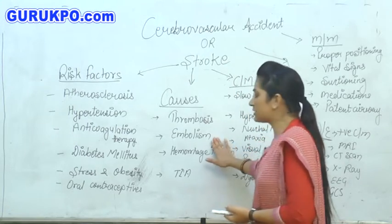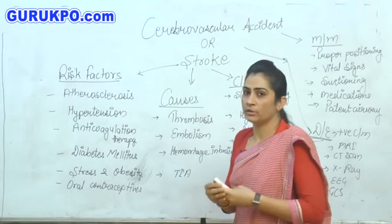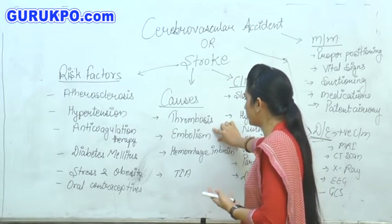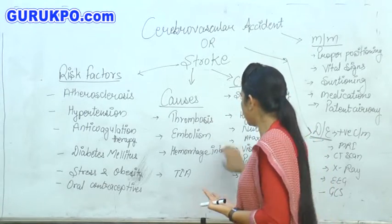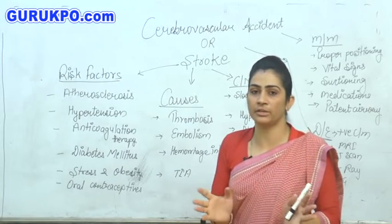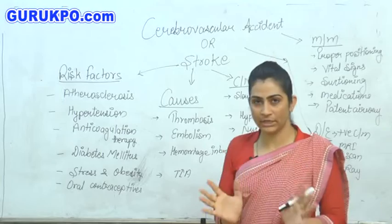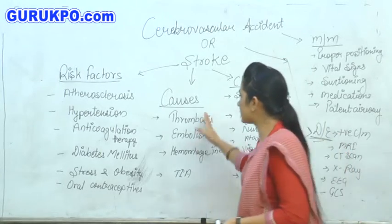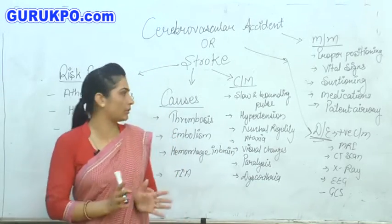Next one is embolism. It is any air bubble or bubble of water that reaches the brain level through the blood vessels. Third one is hemorrhage in the brain, or any abnormal hemorrhage resulting from the rupture of the blood vessels of the brain tissues. Next one is transient ischemic attack. These all are the causes of cerebrovascular accident or stroke.